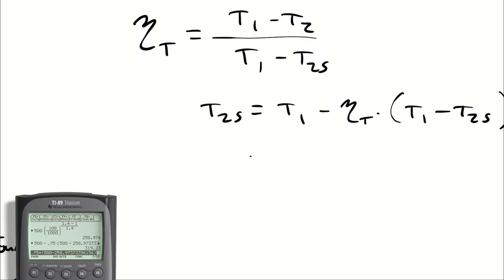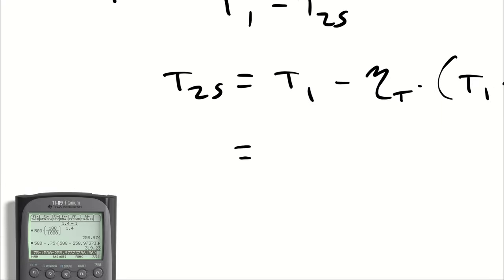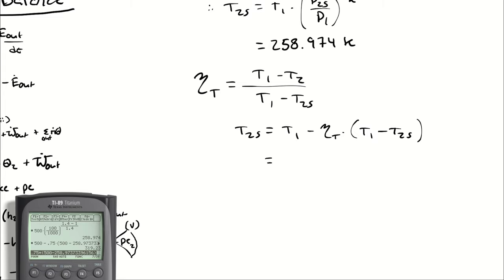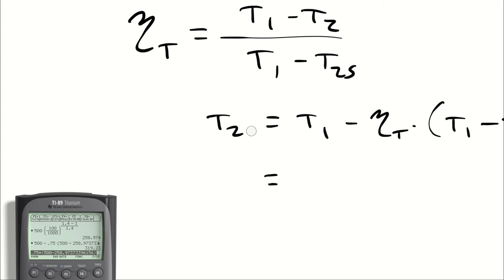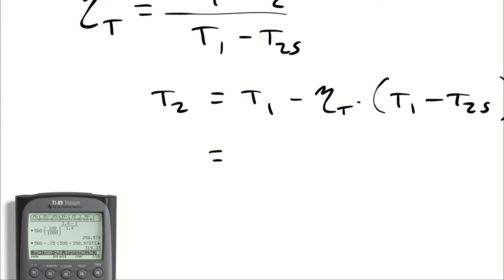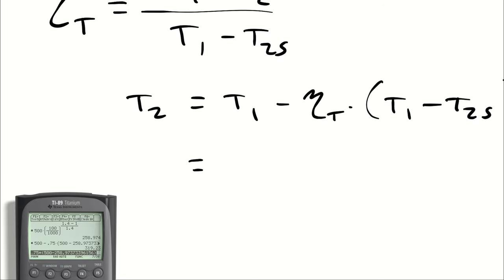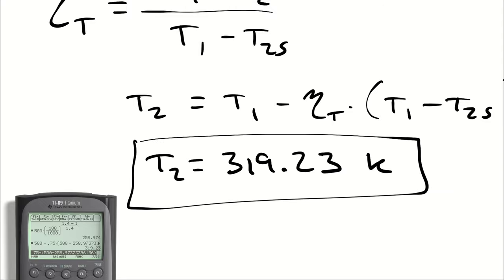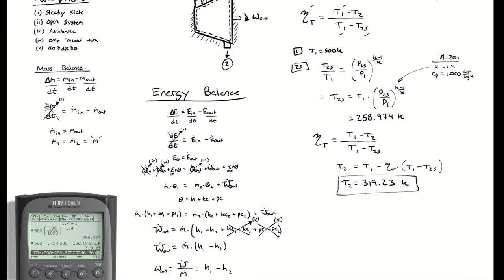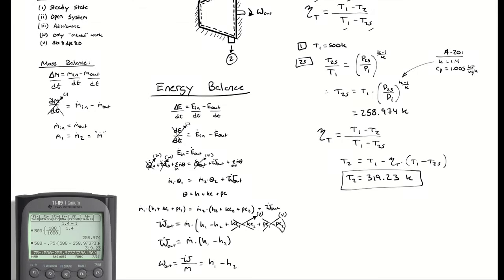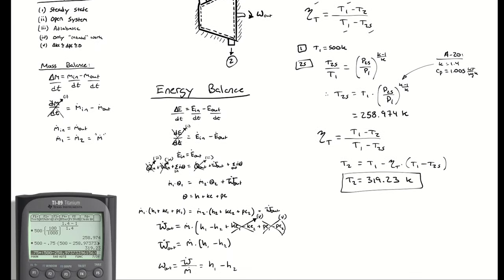Our temperature is going to be... Excuse me, that was supposed to be T2 actual. Did I do the rest of the algebra right? Yeah, I did. So T2 actual is going to be 319.23. That's my actual temperature at the actual outlet, which is part A.